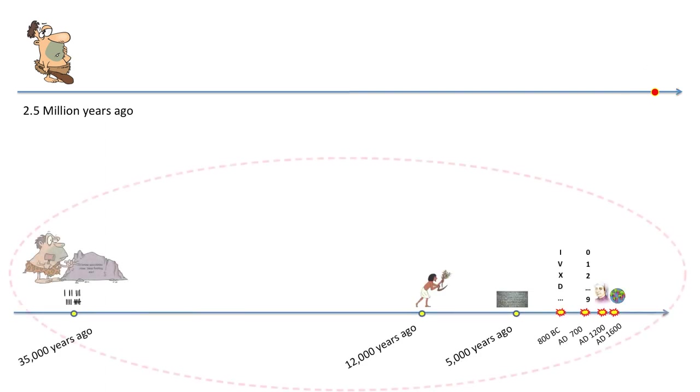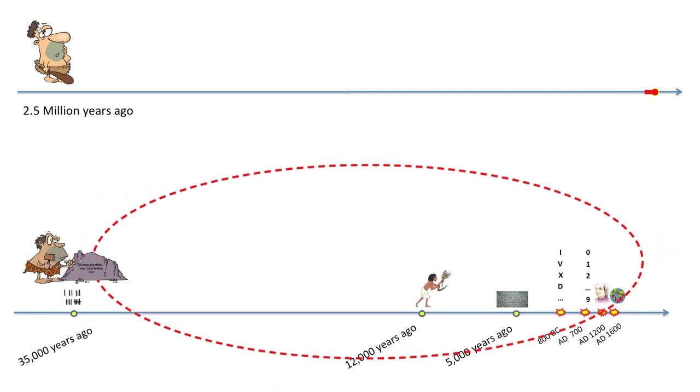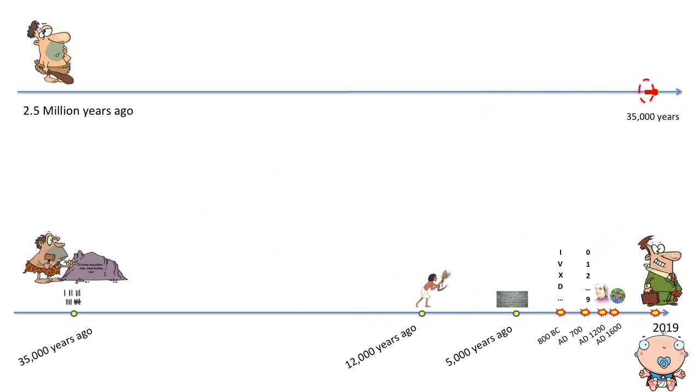Let's project the evolution of our number sense onto this 2.5 million years stretch when humans first emerged. This is 2.5 million years ago. This is now. The whole section of this 35,000 years time span will contract to this segment, and this is now 2019. For anyone born around this time, they are expected to be ready for the society in 20-ish years.